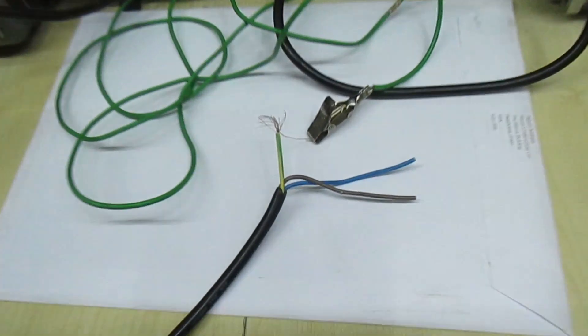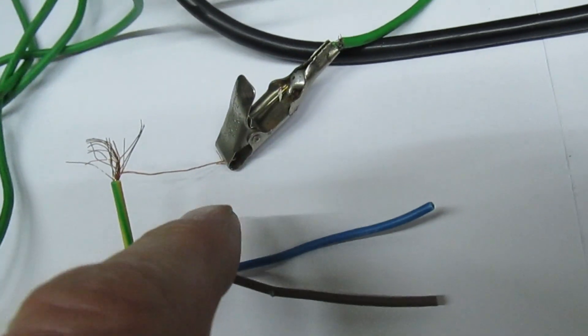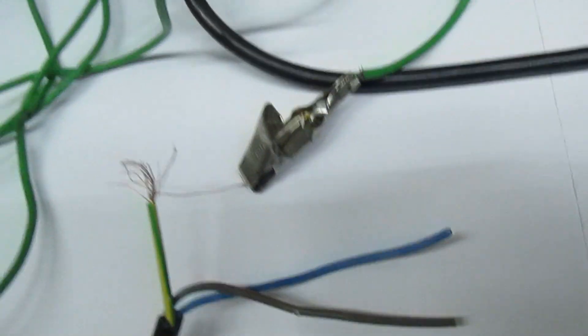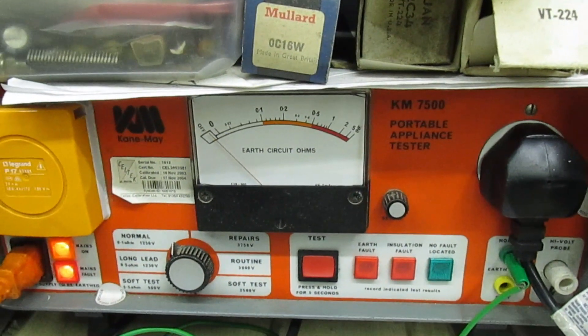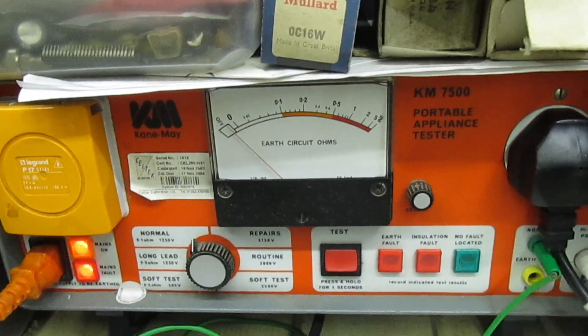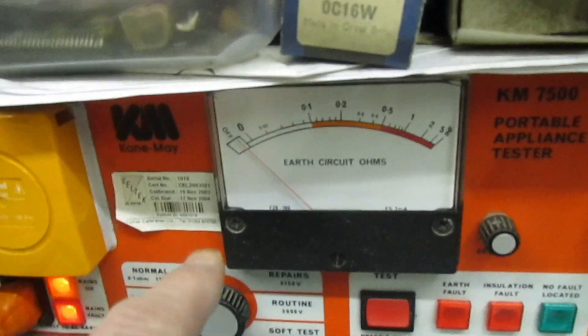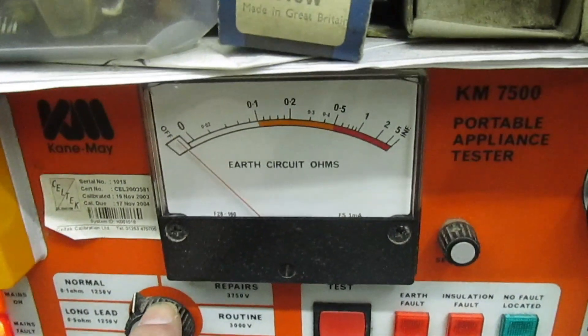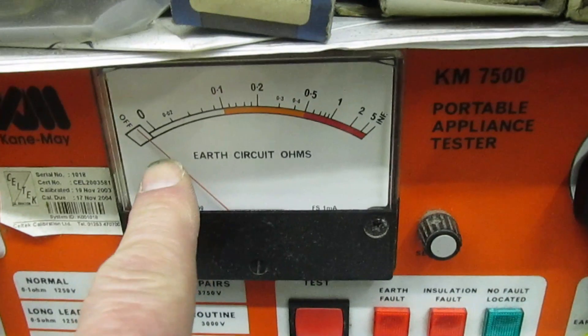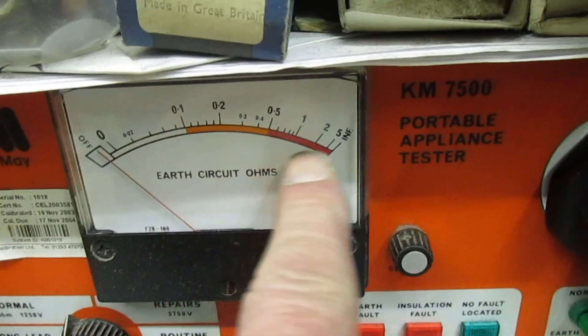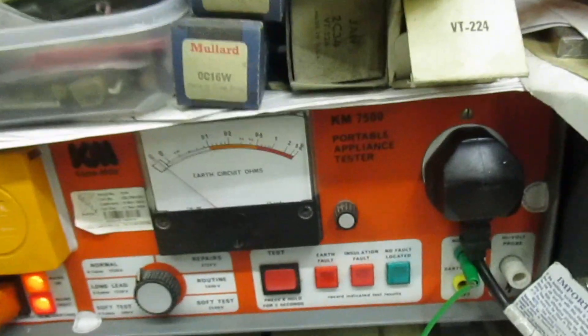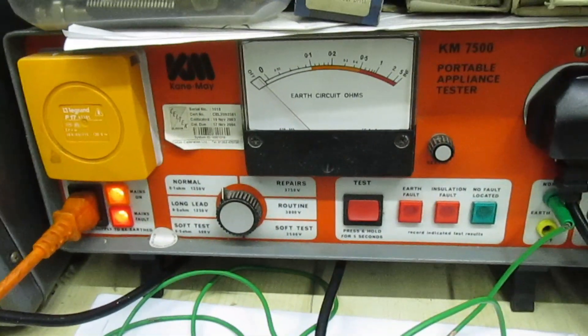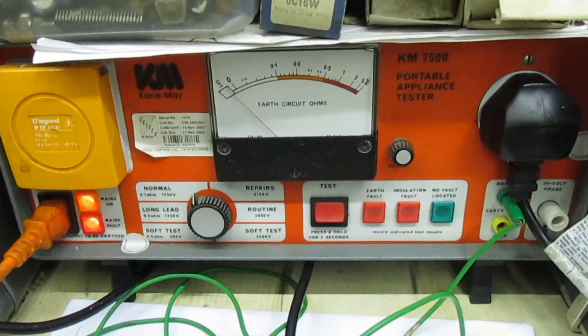Right so if you can see we've got exactly the same setup, we clipped onto the frayed piece of earth wire but this time I'm using the K&M KM7500 PAT tester and now this is a very brutal test. We're actually putting 25 amps down the earth wire and we measure the resistance, the earth circuit ohms, the resistance when we're passing 25 amps down the wire. Now putting 25 amps down a piece of wire will show up any problem there is with the integrity of the earth.